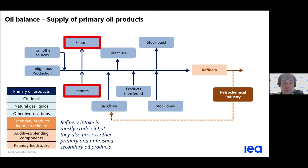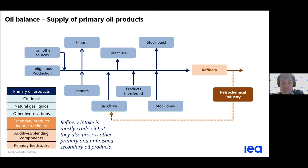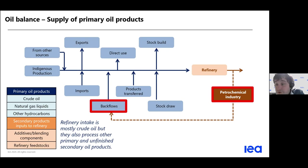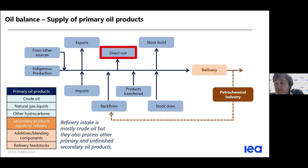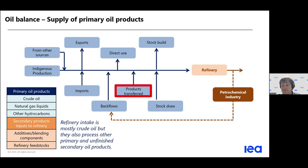The second line of supply is what we call other sources — additives, biofuels — things which do not come directly from oil production. The supply is then influenced by trade — imports and exports — and by changes in stocks. If you take oil from stocks, it can go to the refinery. Another important thing we already mentioned is backflows — secondary products which have been refined and which come back to the refinery. There is also some oil which is directly used without being refined; for example, crude oil burned to produce electricity.